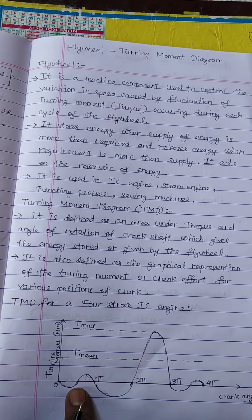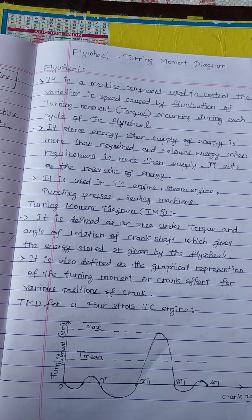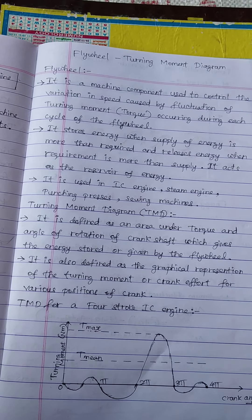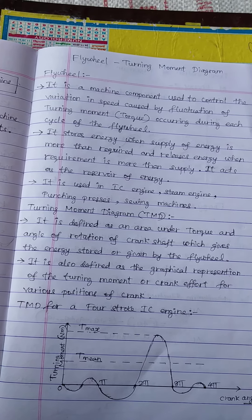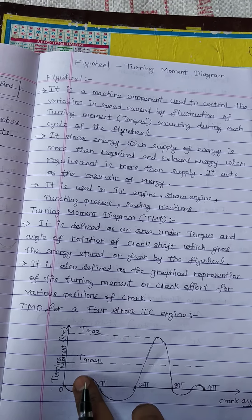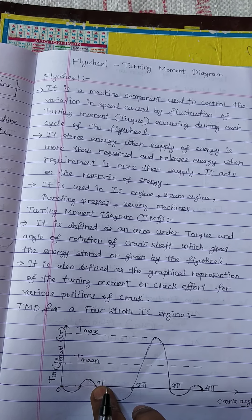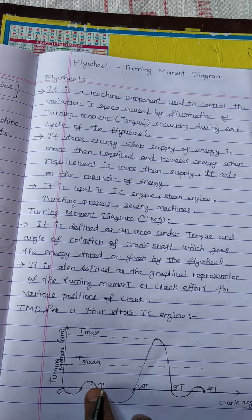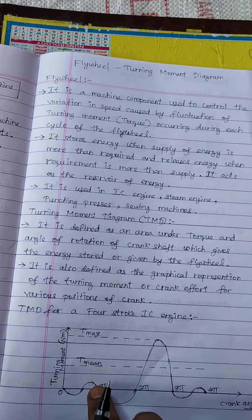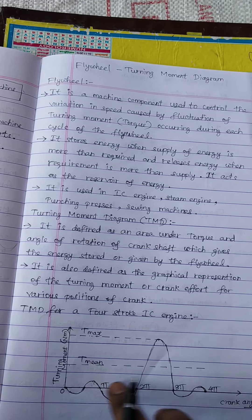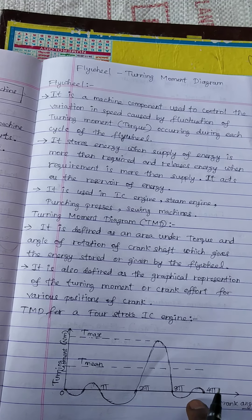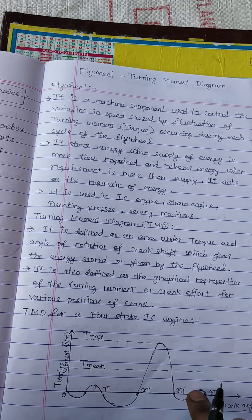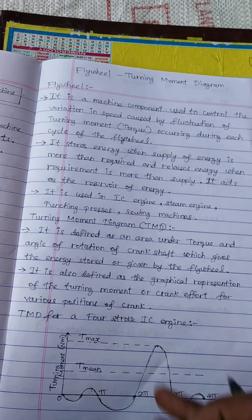For example, in the suction stroke, initially we have to do some work for the movement of the piston or movement of the crank. After that, due to the inertia of the crank, we have some energy, and for this portion we are not giving energy to the engine. In the exhaust stroke also, we have some inertia force of the crank, so that energy is not needed to be given to the engine.